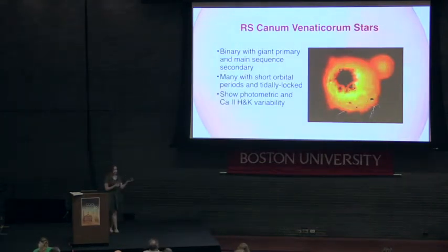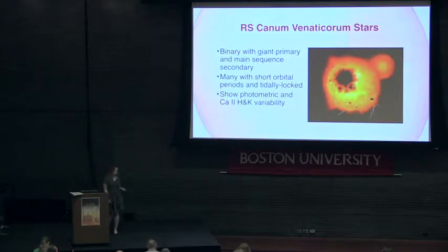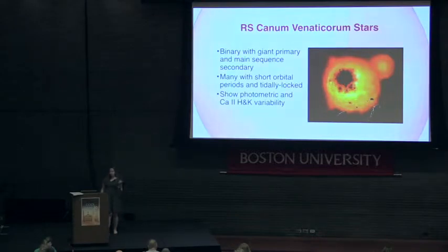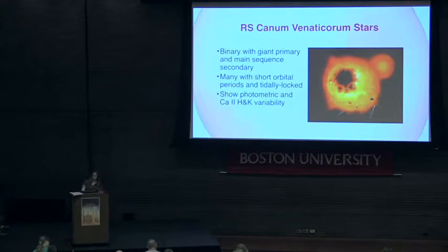They are typically RS CVn stars — binary systems where the primary star is a giant star. It typically shows evidence of calcium H and K variability as well as photometric variability. They're usually in tightly locked orbits with a companion that's less evolved, usually a main sequence star, and they have orbital and rotation periods of about one to three weeks.